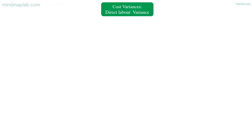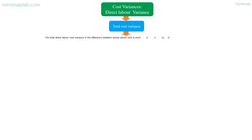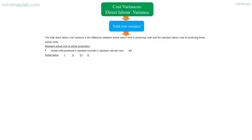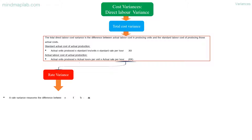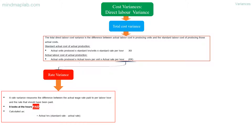Direct labor variance — total cost variance. The total direct labor cost variance is the difference between actual labor cost in producing units and the standard labor cost of producing those actual units. Standard labor cost of actual production: actual units produced multiplied by standard hours per unit multiplied by standard rate per hour. Actual labor cost: actual units produced multiplied by actual hours per unit multiplied by actual rate per hour. Rate variance measures the difference between the actual wage rate paid per labor hour and the rate that should have been paid. It looks at the hours paid and is calculated as: actual hours multiplied by the difference between standard rate and actual rate.